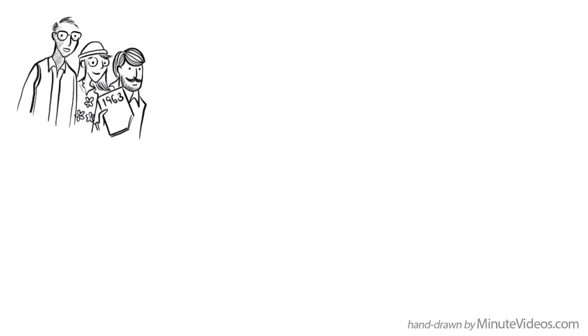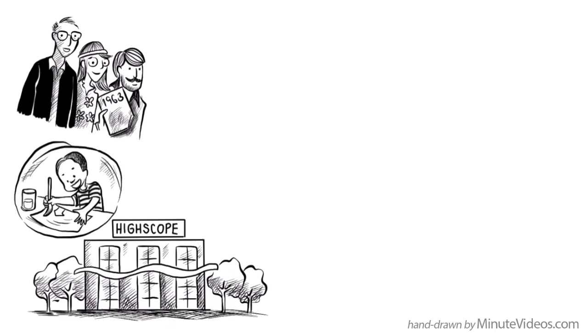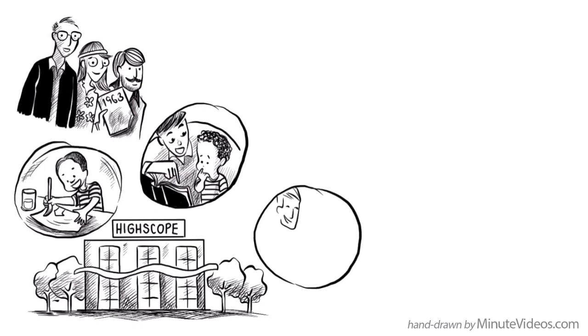In a study that began in 1963, psychologist David Weikart and his team randomly divided 123 underprivileged kids into two groups. One group spent two years at a top preschool with excellent teachers. They made art, discussed problems, and received a lot of attention, respect, and love.